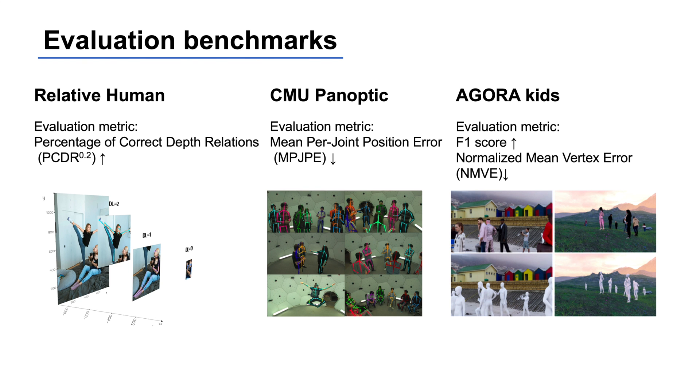We perform quantitative and qualitative experiments to measure how BEV performs in comparison with previous methods. We evaluate BEV on the challenging in-the-wild Relative Human, CMU Panoptic, and synthetic AGORA Kids datasets. On Relative Human, we report the percentage of correct depth relations between the ground truth depth layer and the estimated 3D translation. On CMU Panoptic, we report the mean per joint position error between the ground truth and the estimated 3D pose in millimeters.